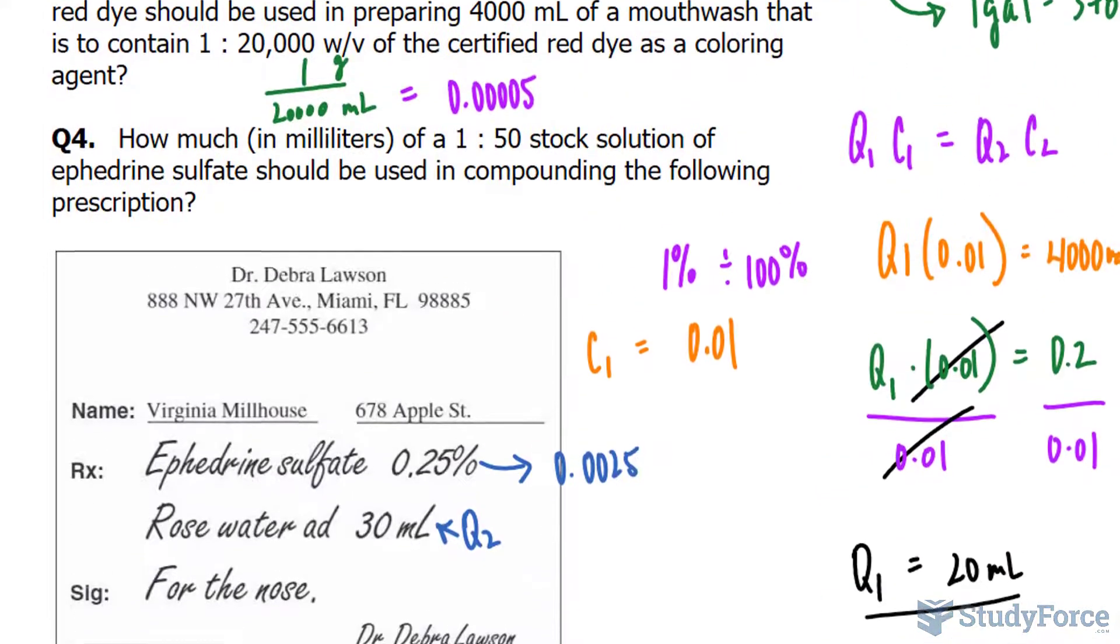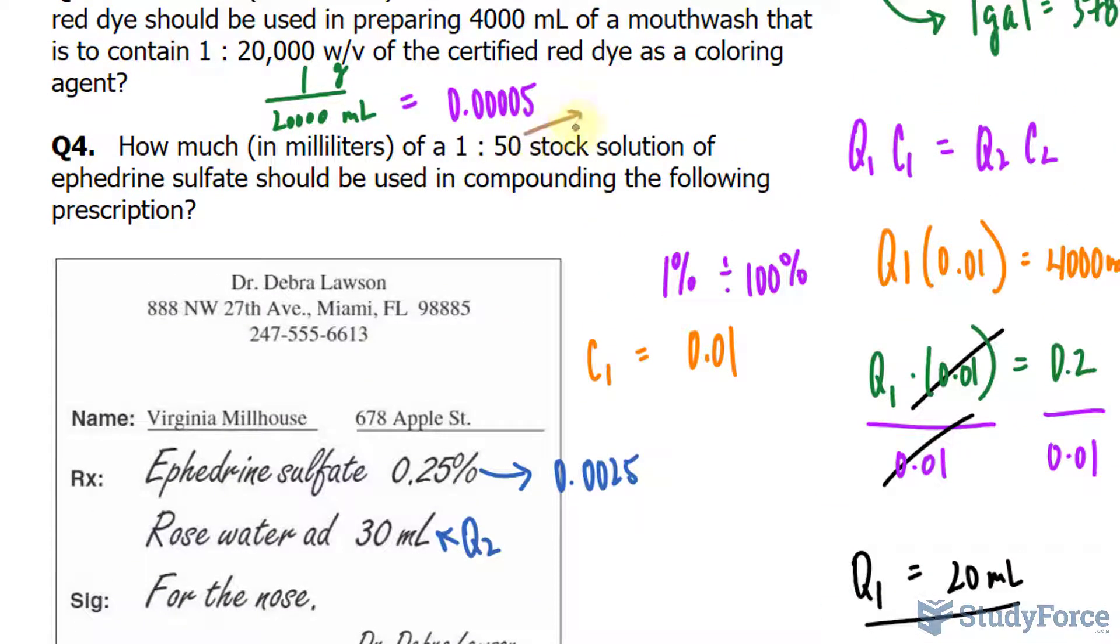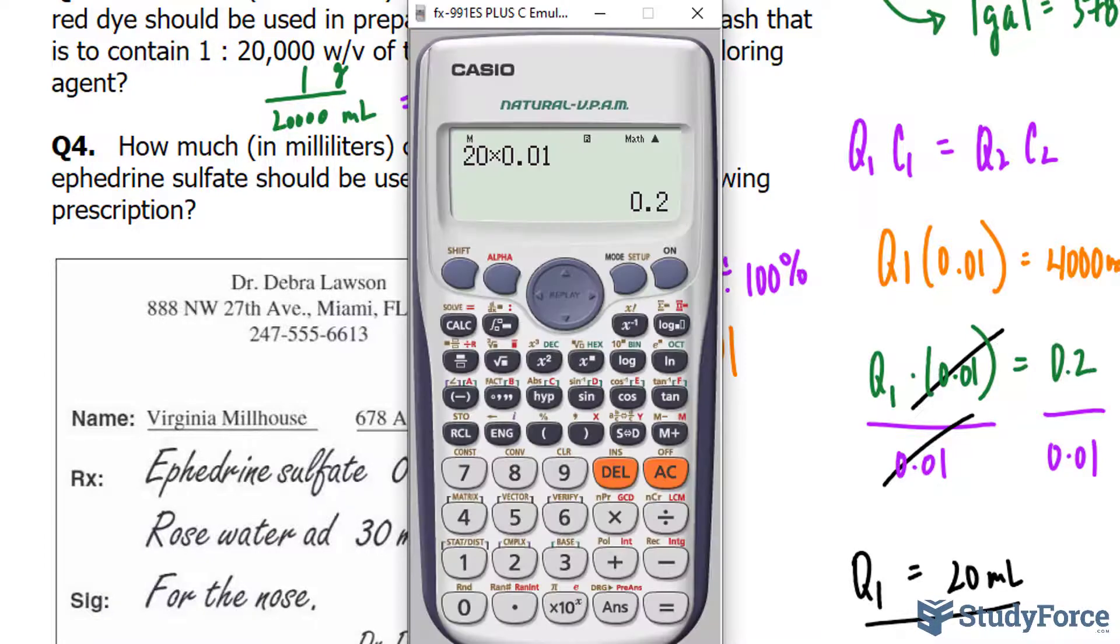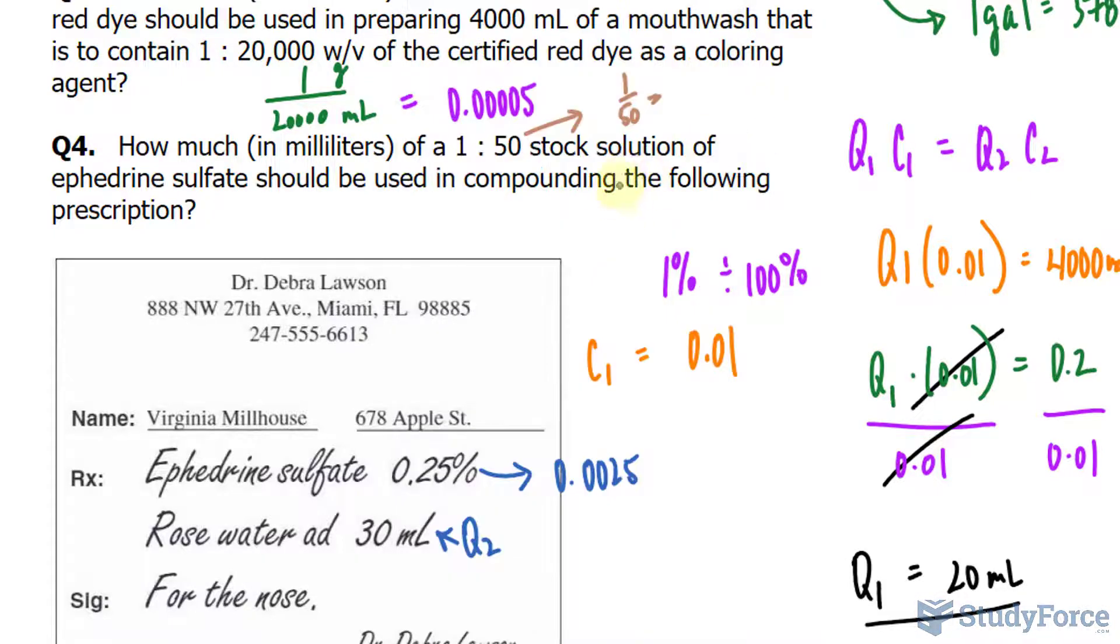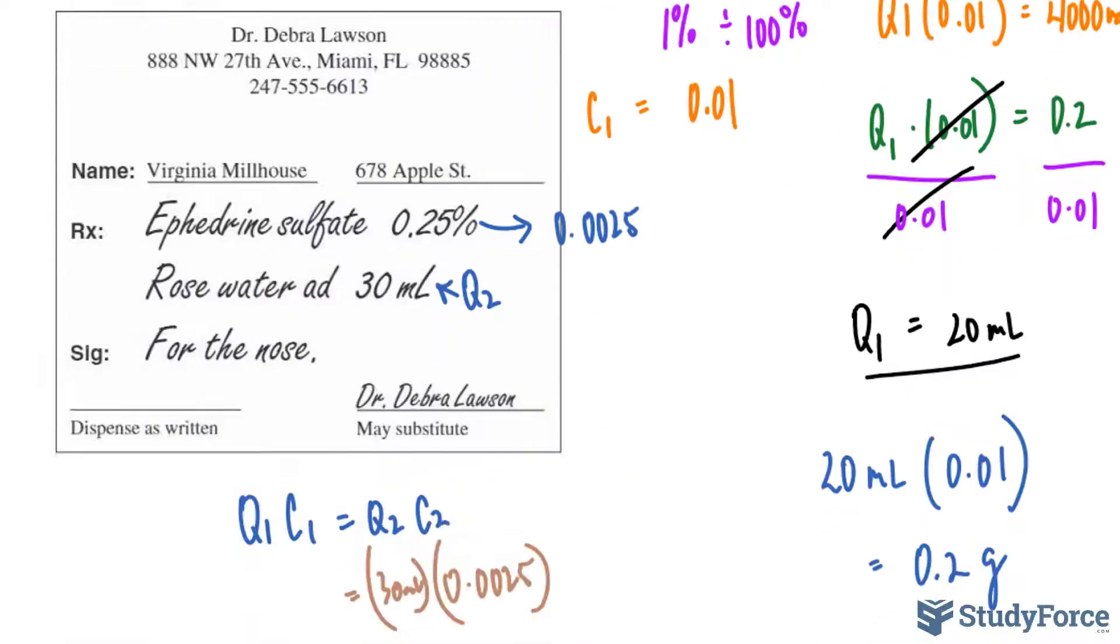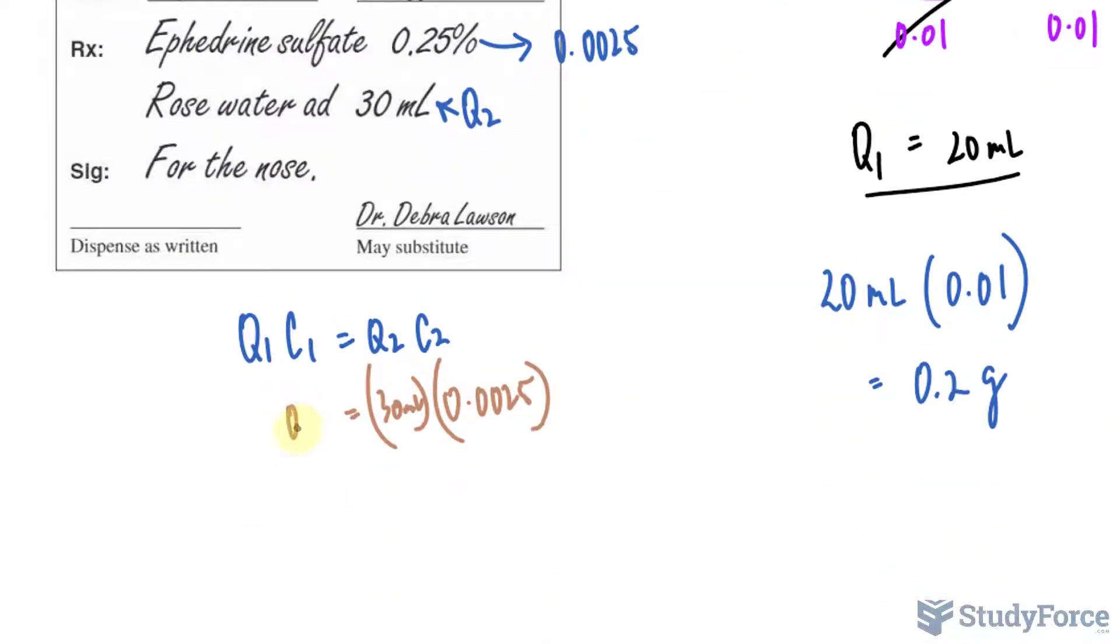We start with 1 to 50 concentration, or 1 over 50. As a decimal, that is equal to 0.02, and that's our C1 value, so 0.02, and we're looking for Q1.